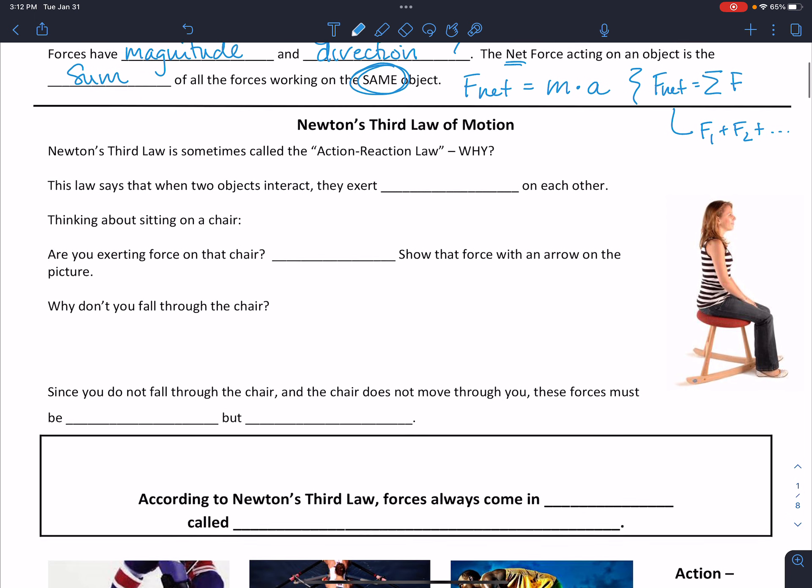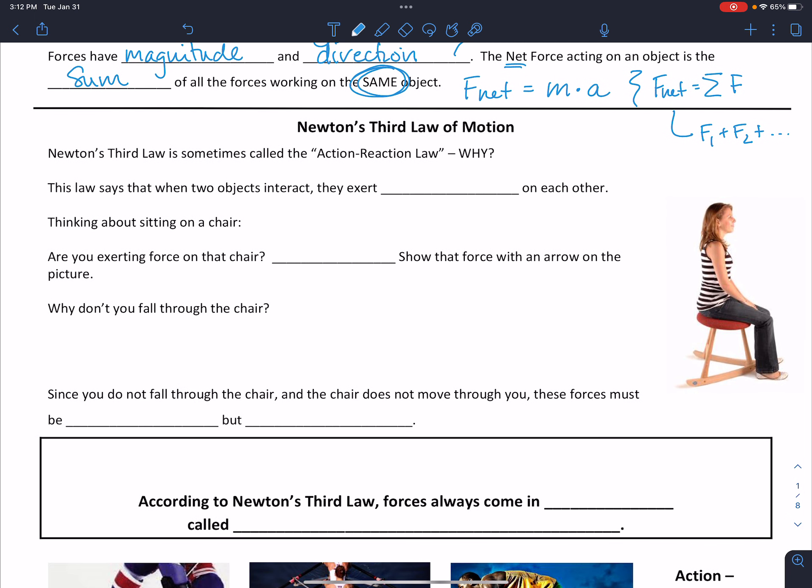So Newton's third law is sometimes known as the action-reaction law. And the reason that we call it that is it basically states that for every action, there is an equal but opposite reaction. This law states that when two objects interact, they exert force on one another. So for an example, let's think about sitting in a chair. I have a picture of a woman sitting on a chair over here.